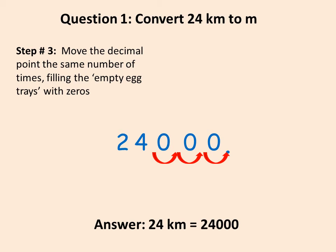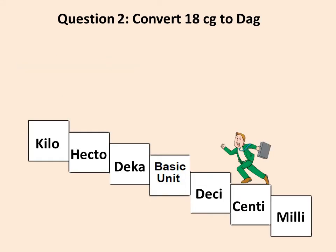Let's try another example. In this example we are moving from centigrams to deca — the capital D-a stands for deca; a lowercase d would be deci. In the previous example we moved from a bigger unit to a smaller one. Now we're doing the opposite: moving from centi to deca, which means moving from a smaller unit to a larger unit.